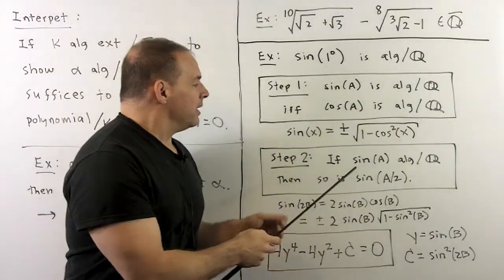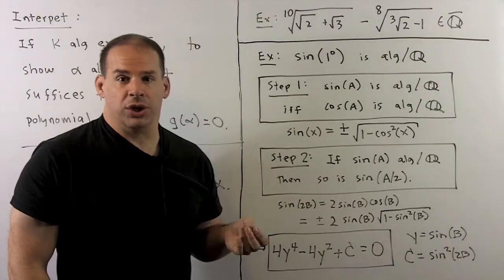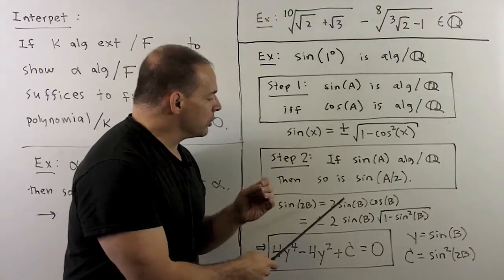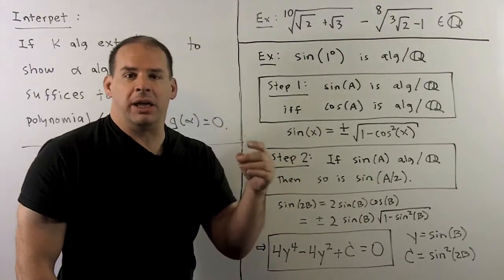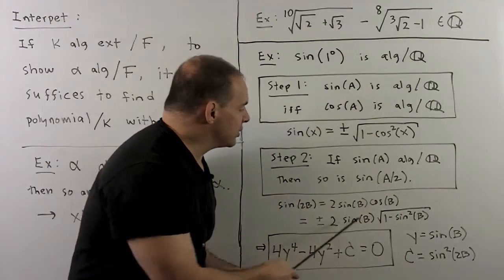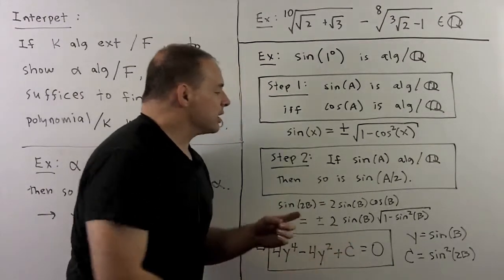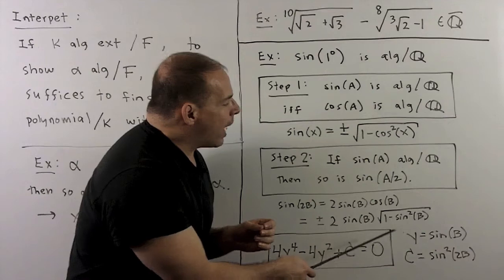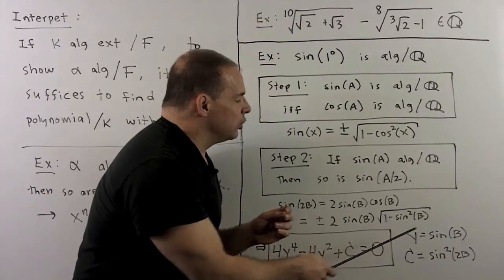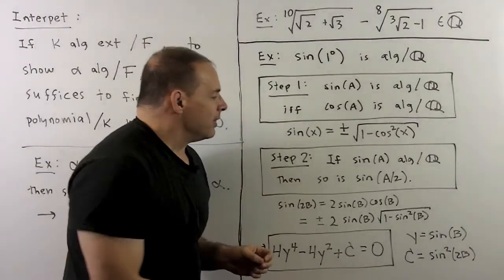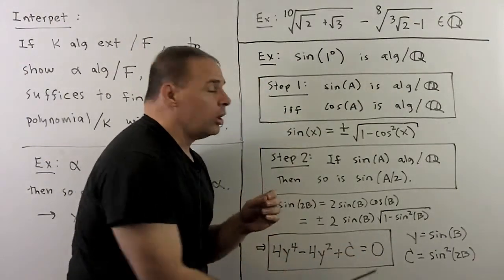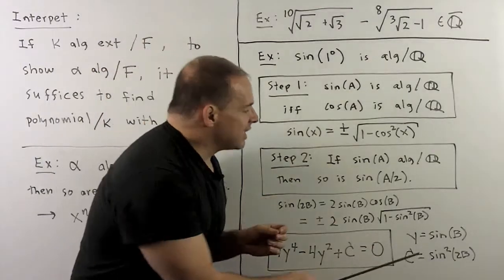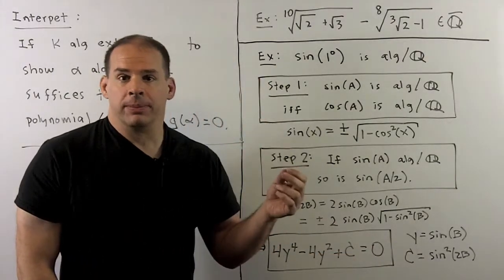Next step: if sine of a is an algebraic number, then so is sine of a over two. To see this, we apply the double angle formula for sine: sine of 2b equals 2 sine b cosine b. I can write cosine b entirely in terms of sine, and rewrite this as a polynomial equation: 4y to the fourth minus 4y squared plus c equals zero, where y equals sine of b and c equals sine of 2b squared. So if sine of 2b is algebraic, then sine of b satisfies a polynomial with coefficients in the algebraic numbers, meaning sine of b is also an algebraic number.